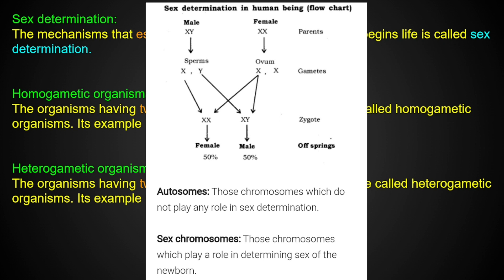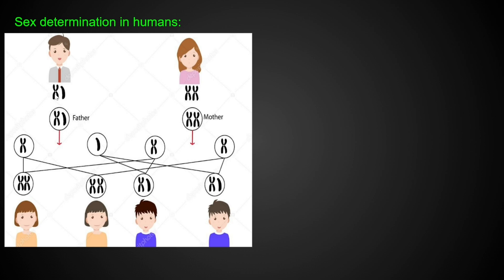Let us suppose the male XY chromosome has two possibilities. The sex of the child depends on whether the X sperm or Y sperm fertilizes the egg. Next is sex determination in humans. This shows the father, who has X and Y type chromosomes, and the mother, who has XX chromosomes — female, homogametic.